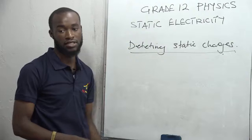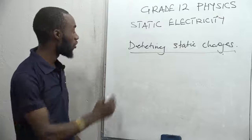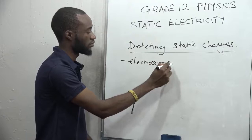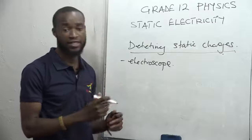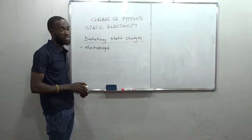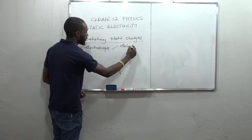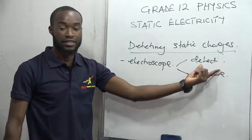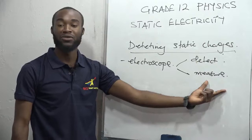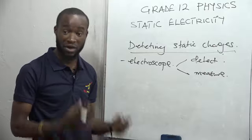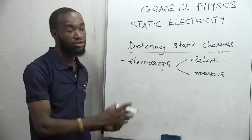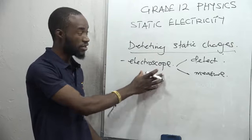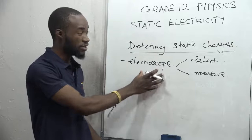The next subtopic we are going to look at is detecting static charges. Static charges can be detected by an instrument called an electroscope. An electroscope does not only detect electric charges but also measures the amount of electric charges. I will draw a structure of an electroscope and take you through each part and how it plays an important role in detecting and measuring electric charges.